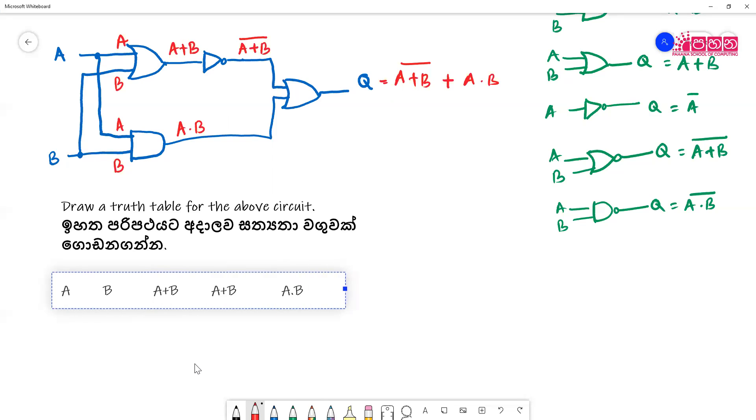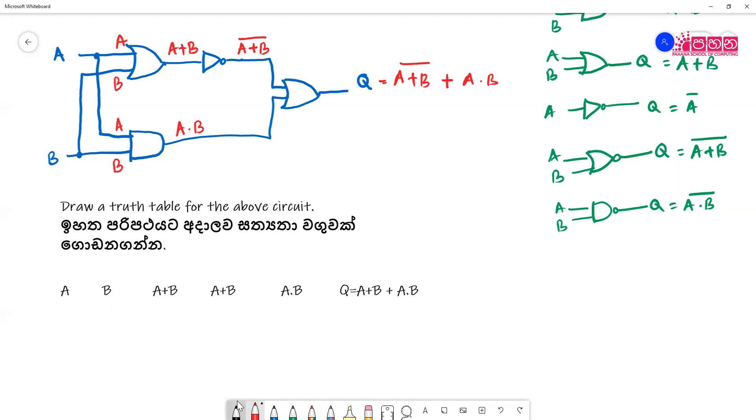Then we will have A dot B. And finally I am adding the answers together, A plus B bar plus A dot B. So we have A, A plus B, A plus B bar, then Q is A plus B bar plus A dot B.